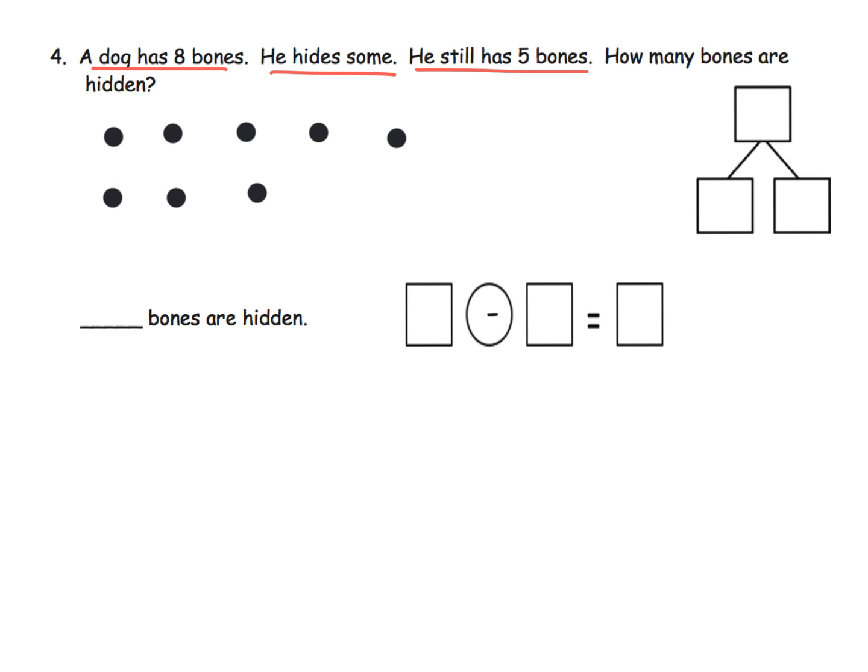Now, he hides some. We don't know how many he hides, but he still has 5, so I'm going to circle the part that we know. And I did not mean to make it so thick there. And how many bones are hidden? So these leftovers right here are what he has hidden, and so that's the part that we're going to cross off.